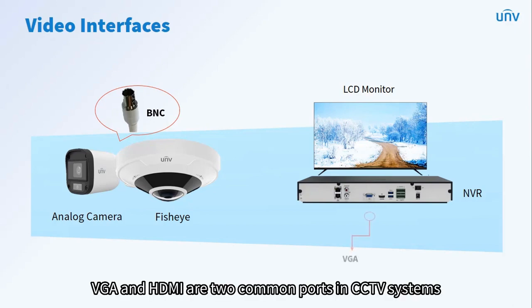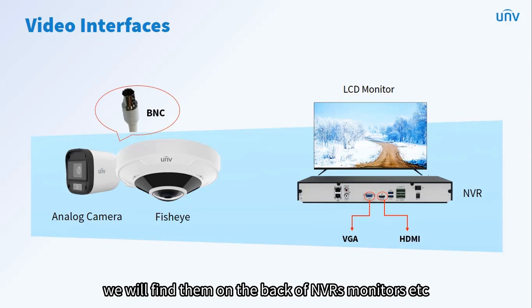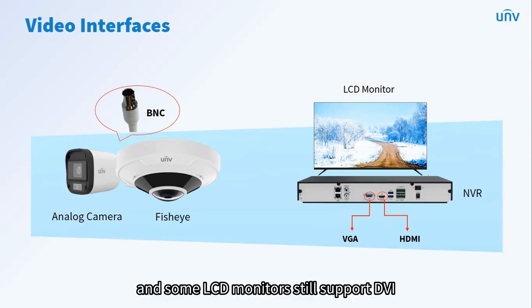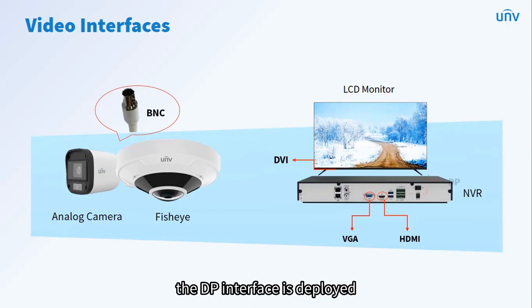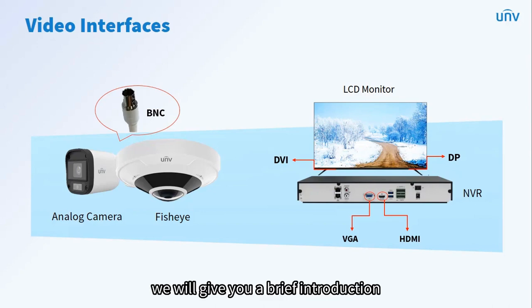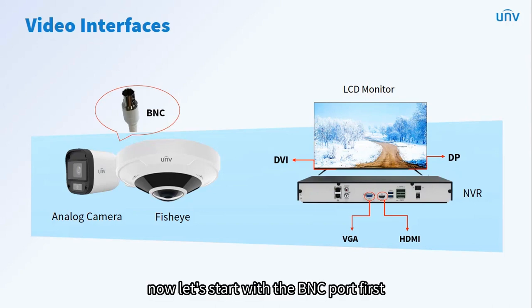VGA and HDMI are two common ports in CCTV systems. We will find them on the back of NVRs, monitors, etc., and some LCD monitors still support DVI. For LCD monitors that support high resolution, the DisplayPort interface is deployed. In the next few pages, we will give you a brief introduction to the ports mentioned. Now let's start with the BNC port first.